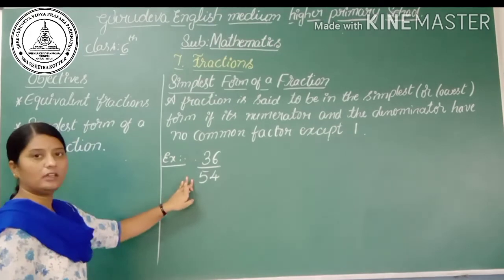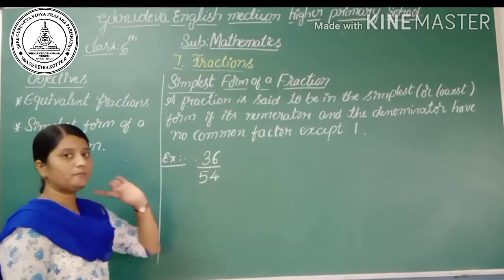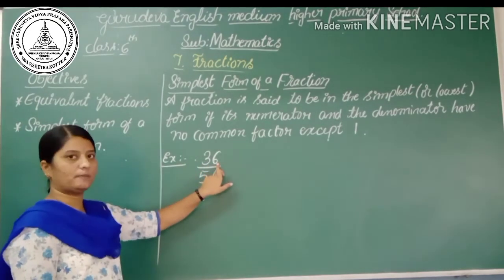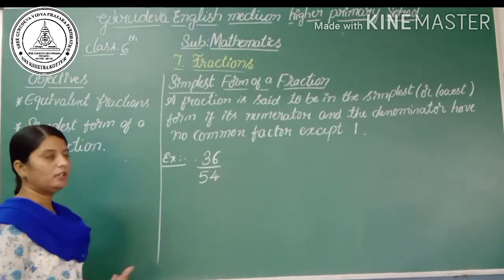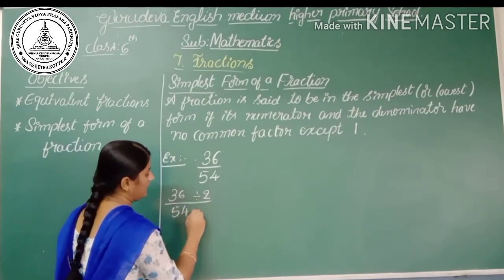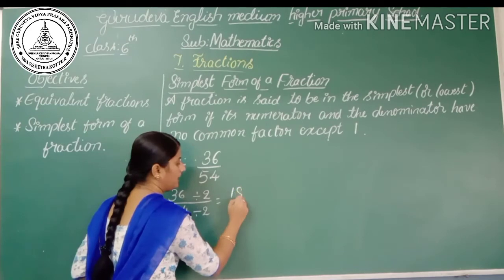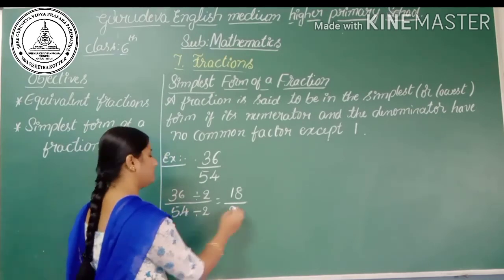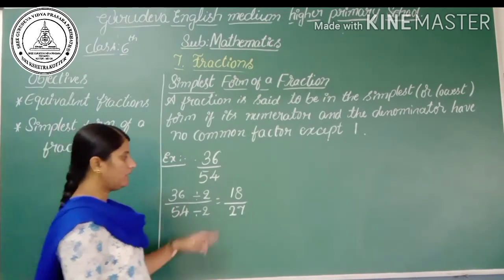Consider 36/54. Both numbers are divisible by 2, since 36 ends in 6 and 54 ends in 4. Dividing both by 2: 36÷2 = 18 and 54÷2 = 27. Now we have 18/27. We can check: 1+8 = 9 and 2+7 = 9, so both 18 and 27 are divisible by 9.